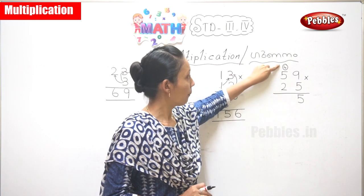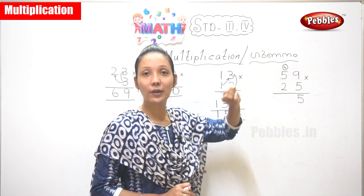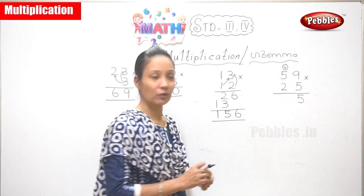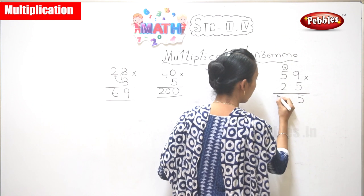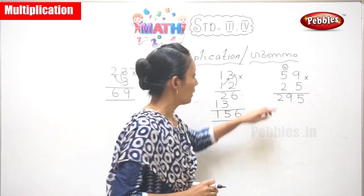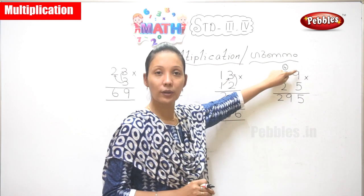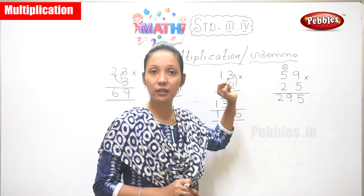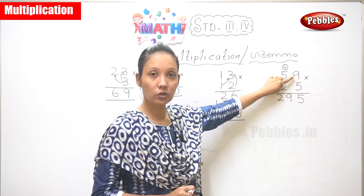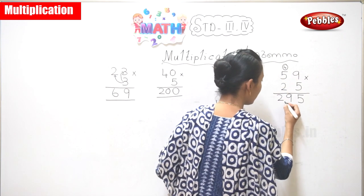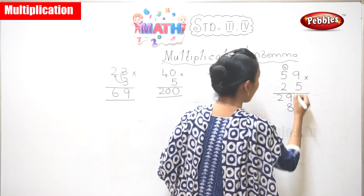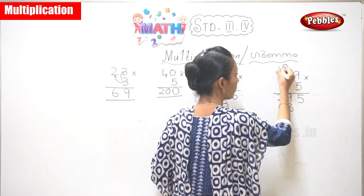So 5 fives are 25, plus 4 carried, gives 29. Now next you have to multiply 2 into 9. 2 nines are 18. So now you need to write 8 over here and again carry 1 above.